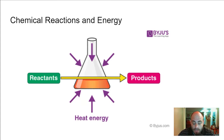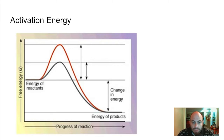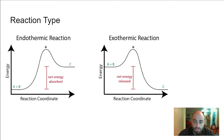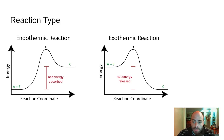The energy that is necessary to begin a reaction is called the activation energy. Activation energy can be high or low depending on the type of reaction. Some reactions end with more energy in the products than in the reactants — these are called endothermic reactions. An exothermic reaction has less energy at the end. The activation energy on each of these is different, but they both still require some activation energy.